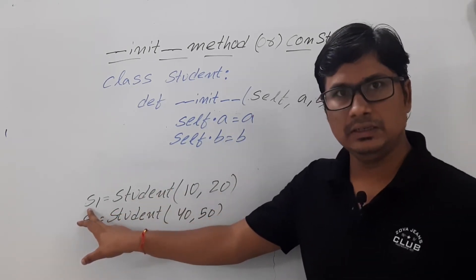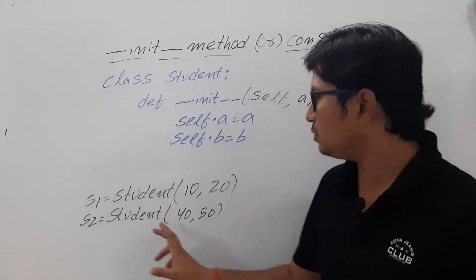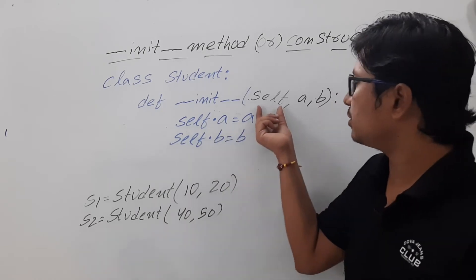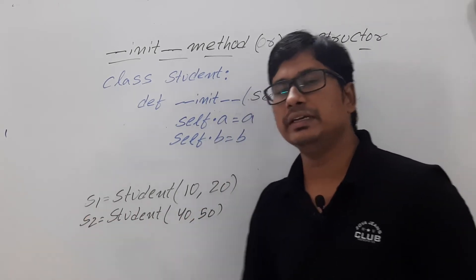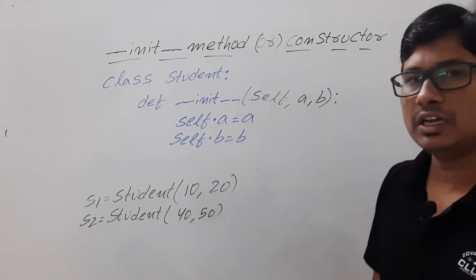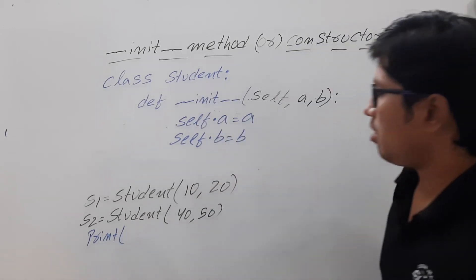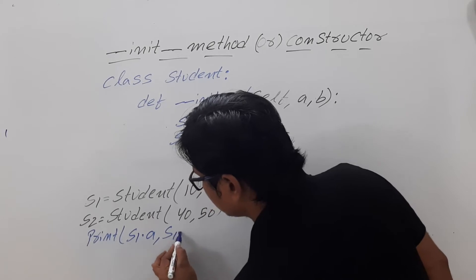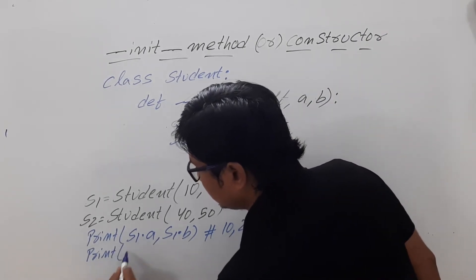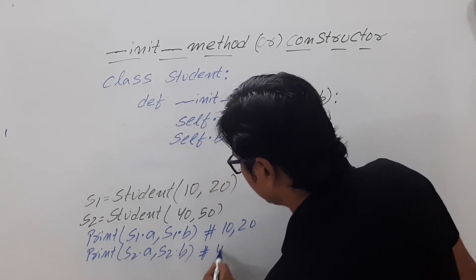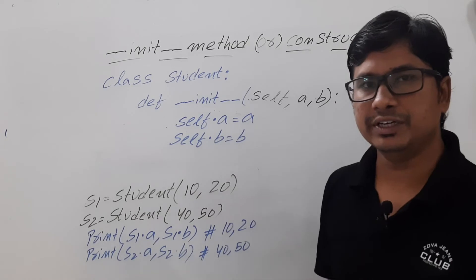When creating s1, 'self' refers to s1, so s1.a = 10 and s1.b = 20. When creating s2, 'self' refers to s2, so s2.a = 40 and s2.b = 50. If you print s1.a and s1.b you will get 10, 20. If you print s2.a and s2.b you will get 40, 50. This is how you initialize the variables of an object with different values per object.